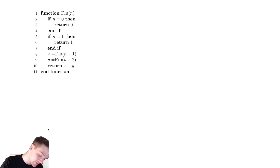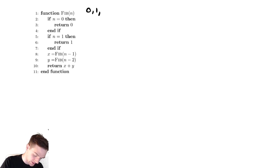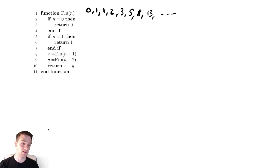The Fibonacci numbers, as a reminder, are 0, 1, and then you add up the previous two to get the next: 1, 2, 3, 5, 8, 13, and you can go on forever. Those are the Fibonacci numbers.